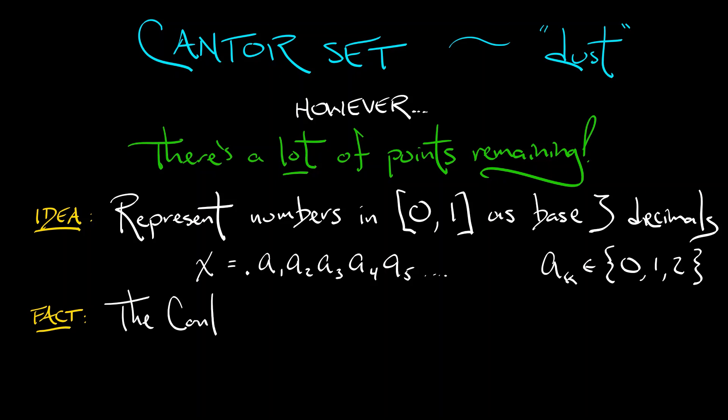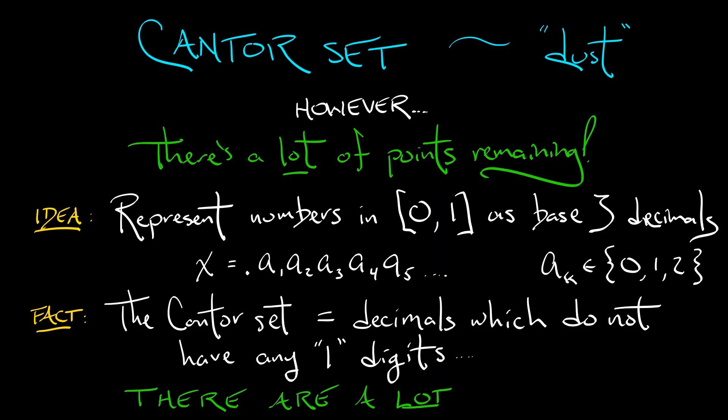Now, here's a fact. That middle third's Cantor set consists of those decimals which do not have any one digits. If I don't have a one for the first digit, that's removing the middle third of the interval. How many such decimals are there? Well, there's quite a lot. I can write down any sequence using just zero and two digits, and that is going to be an efficient representation of my Cantor set.